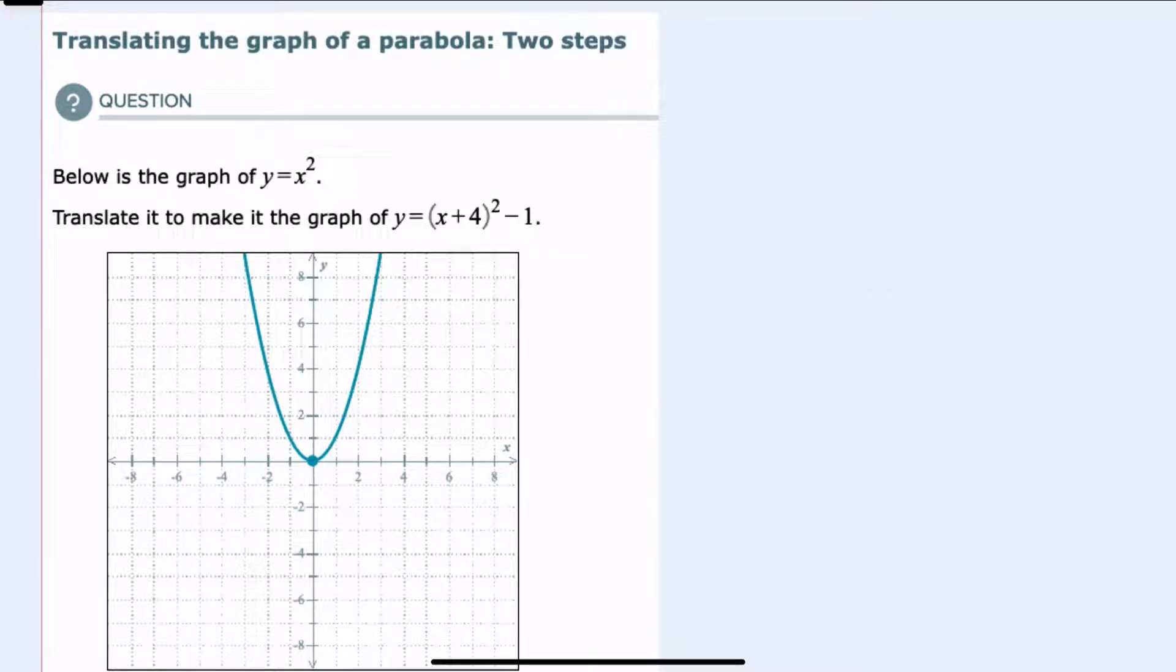In this video, I'll be helping you with the ALEKS problem type called Translating the Graph of a Parabola Two Steps. We're given the graph of the function y equals x squared, and we're asked to translate it to make the graph y equals (x + 4)² - 1.